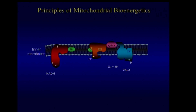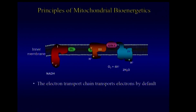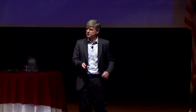We'll focus on the inner mitochondrial membrane — a membrane composed of various different proteins. The electron transport system transports electrons by default because it is simply a series of magnets, each progressing to a stronger magnet, with oxygen sitting at the end as the ultimate electron magnet. Electron flow is always towards oxygen.